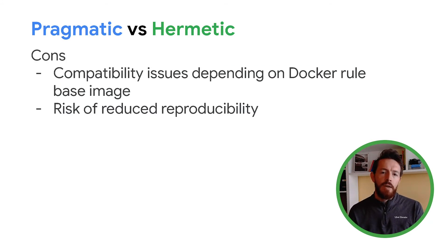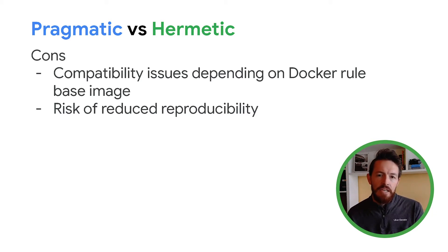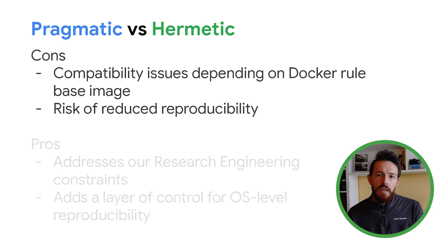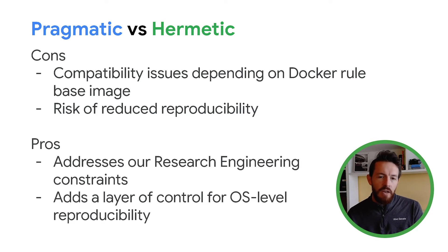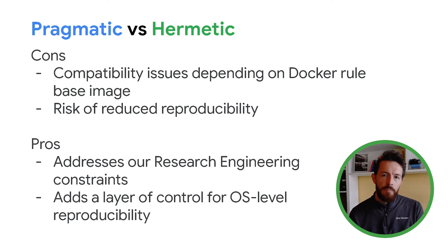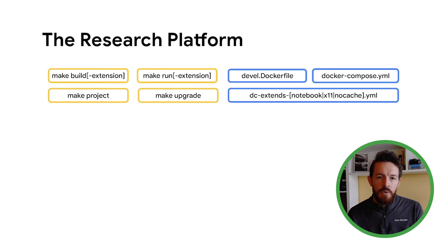What are the issues of being pragmatic? It comes with slight compatibility issues when you declare dependencies in the Dockerfile, because when you package an application using Bazel, it won't be aware of those dependencies. There is a slight risk of reduced reproducibility, but we have strategies to mitigate this. In terms of advantages, this setup addresses most of our research engineering constraints and adds a layer of control to make the research platform more portable across operating systems.